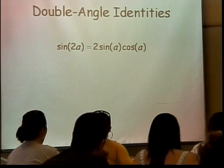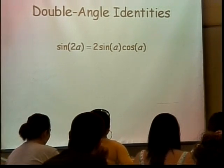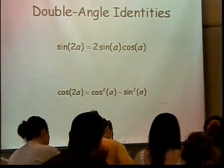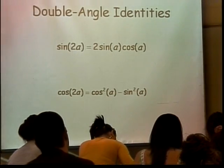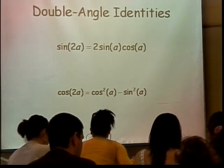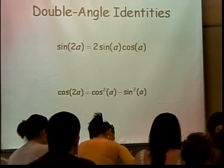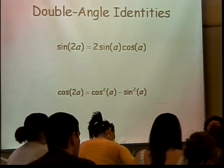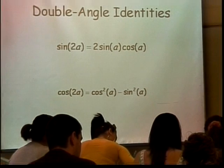Now, here, unfortunately, is the one that confuses people to no end. Are you ready? Cosine of 2A comes out to be cosine squared A minus sine squared A. That's not one. Cosine squared of A plus sine squared of A is one. This is not, so don't confuse that.